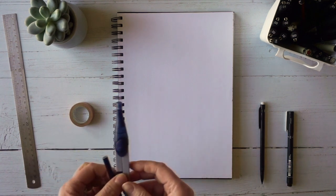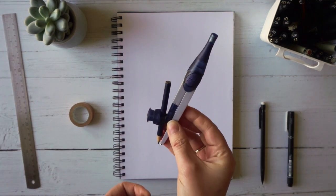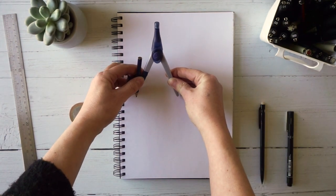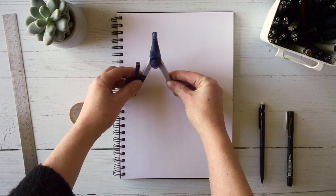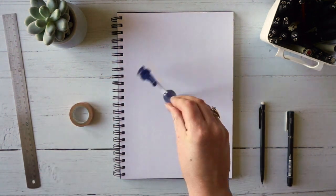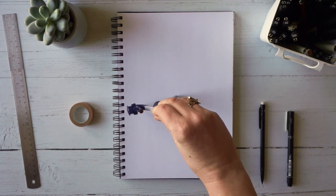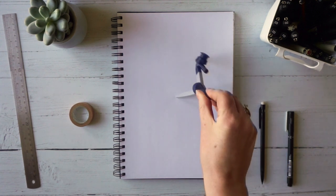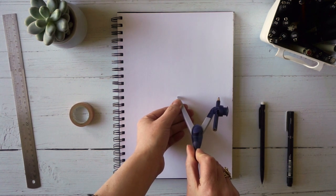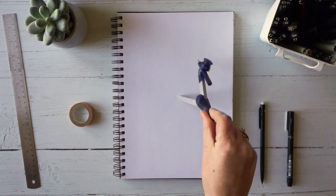You can use your compasses to draw a circle. Just open them out as large as you'd like, place the point down in the center of the page, and make sure you've got plenty of space to draw.